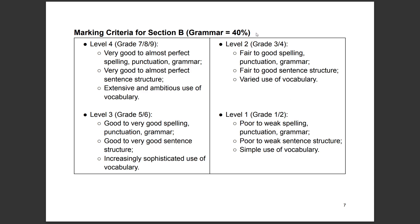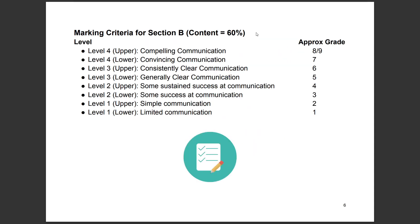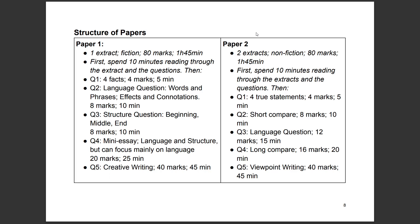So for writing, grammar is really important — it's 40% and content is 60%. Paper one: one fiction extract, 80 marks, one hour 45 minutes. Spend 10 minutes reading through the extract and questions. Question one — pick out four facts — is four marks, five minutes. If you're sharp you can do it in two or three minutes and save time, because timing is critical for the language paper.